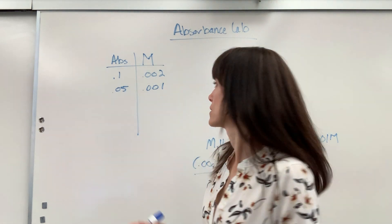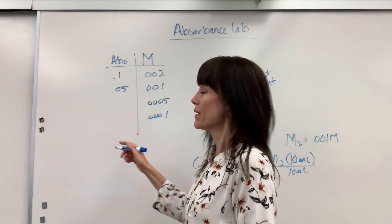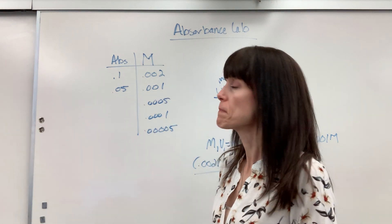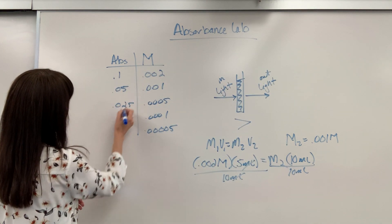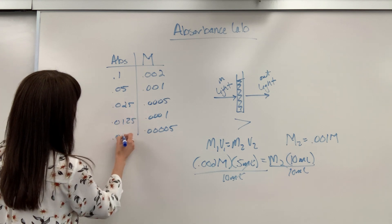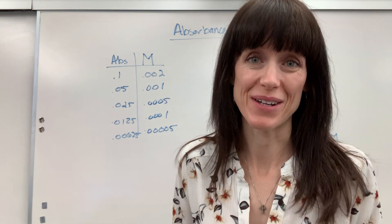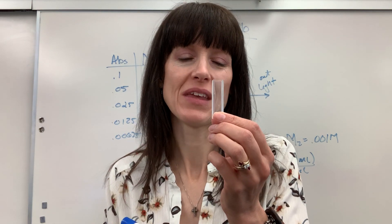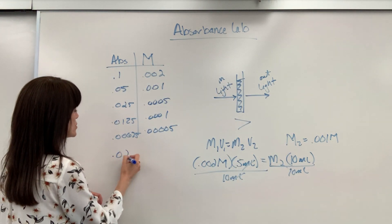After doing your five standards — say concentrations of 0.002, 0.001, 0.0005, 0.00025, and 0.0001 molar with corresponding absorbances like 0.1, 0.05, 0.025, 0.0125, 0.00625 — you then take your unknown. Give students the Gatorade, they pour a little into a cuvette, put it in the machine, and get an absorbance reading — let's say 0.020.